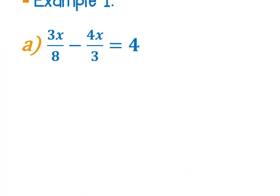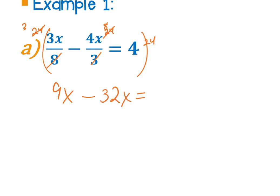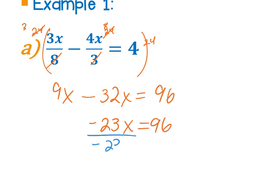Looking at example (a): we would multiply everything by 24, the least common multiple of 8 and 3. Multiplying each fraction and the term on the other side of the equal sign — 8 goes into 24 three times, so 3 times 3x is 9x; 3 goes into 24 eight times, so 8 times 4x is 32x; and 4 times 24 is 96. Combining like terms gives negative 23x equals 96, so divide both sides by negative 23.